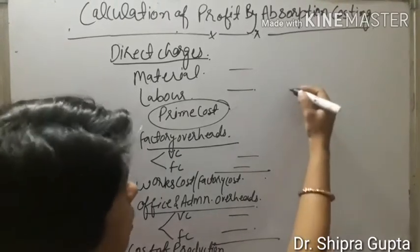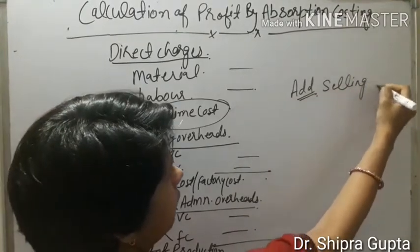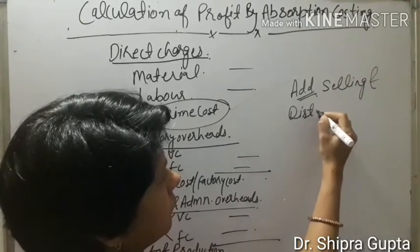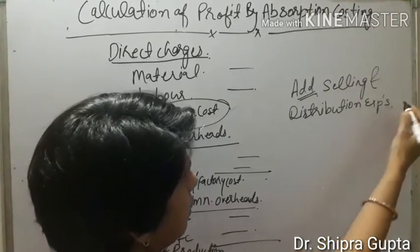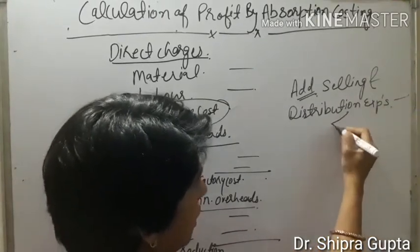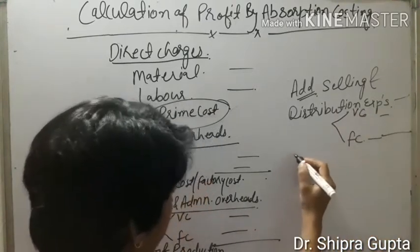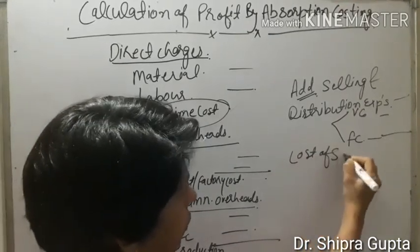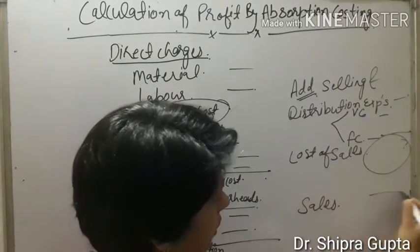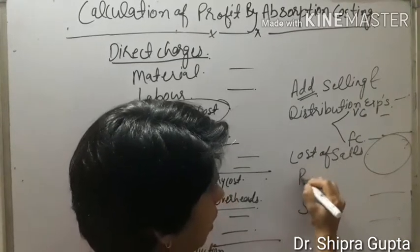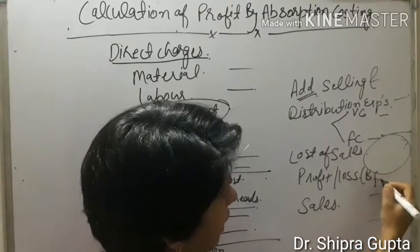Then we add selling and distribution expenses, again divided into two parts — variable and fixed. The overall total is known as cost of sales. Now we deduct cost of sales from sales, and the remaining value is the profit or loss, shown as a balancing figure.